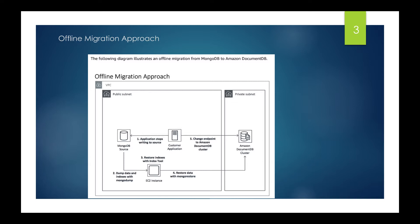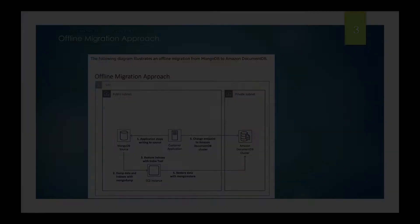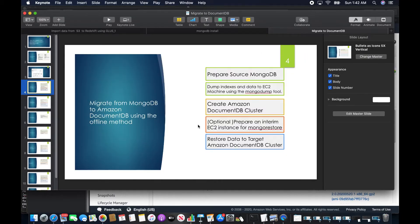There is an interim EC2 instance shown in the diagram, but this is optional — I am not going to create it. I am going to install MongoDB version 3.6 on my EC2 machine, and I'll connect to the Amazon DocumentDB cluster directly from that same EC2 machine which hosts the MongoDB source database, omitting the interim instance.